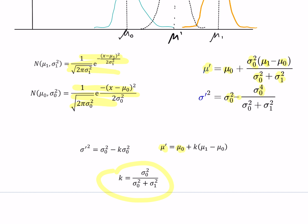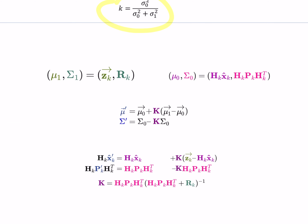Now let me show how these equations extend to multi-dimensional matrix notation. On the left, mu one and sigma one represent the measurement: mu one has mean zk (the actual sensor measurement) and uncertainty matrix rk from the sensor datasheet. On the right, mu zero and sigma zero represent the prediction in the sensor space, with mean hk times xk and covariance hk times P times hk transpose. The new mu is mu zero plus k times (mu one minus mu zero), identical to the one-dimensional scenario.